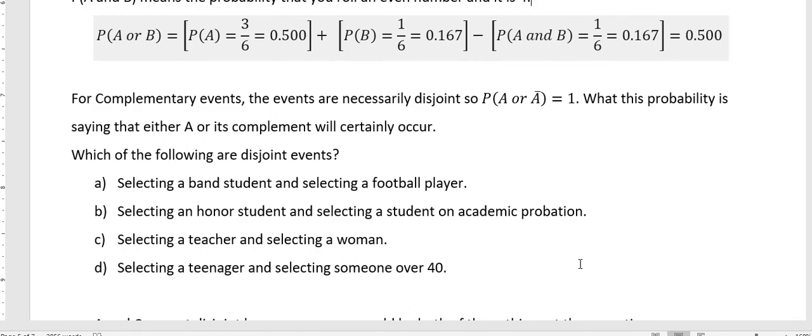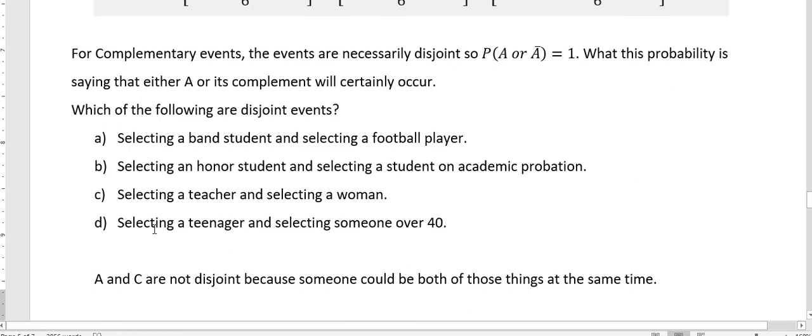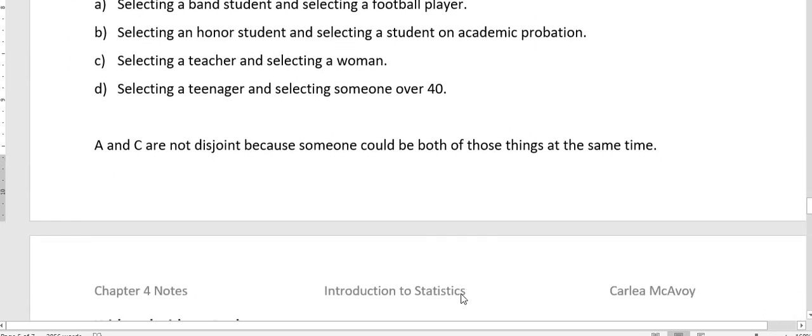Selecting a teenager and selecting someone over 40. Those are two different things. You can't be a teenager and be over 40 at the same time. So those are disjoint events. A and C are not disjoint because someone could be in both of those at the same time.